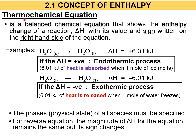A thermochemical equation is a balanced chemical equation that shows the enthalpy change of the reaction with its value and sign, written on the right-hand side of the equation. For example, if H₂O in solid phase converts to liquid phase, its enthalpy change has a positive sign with value +6.01 kJ. If the enthalpy change is positive, it is an endothermic process — meaning 6.01 kJ of heat is absorbed when 1 mole of ice (H₂O solid) melts.